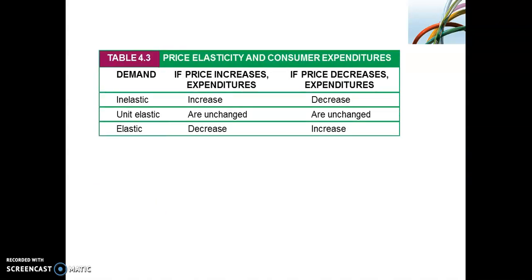Table 4.3 is a summary of elasticity and expenditure. If you think about it from the perspective of a producer or seller of a good, and they knew that demand for the good is inelastic — if they were to increase their price, the quantity demanded would fall, but because demand is relatively inelastic, that fall in quantity demanded is smaller than the increase in price. So the producer's total revenue — price times quantity — would still increase. It is important to understand the usefulness of knowing whether demand is relatively elastic or inelastic, even from a producer's perspective.